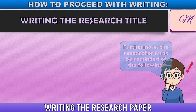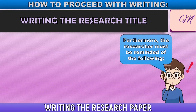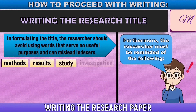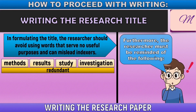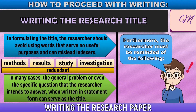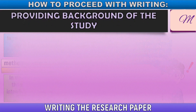Furthermore, when writing the research title, the researcher must be reminded of the following. In formulating the title, avoid using words that serve no useful purpose and can be misleading — examples such as 'methods,' 'results,' 'study,' or 'investigation' tend to be redundant because the research itself is already a study or investigation. Methods and results will be discussed in the latter parts of the paper. In many cases, the general problem or specific question the researcher intends to answer, when written in statement form, can serve as the title. That will be all for today. Next session, we will be discussing the background of the study.